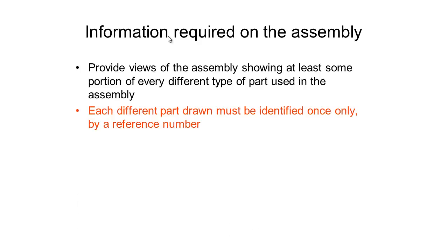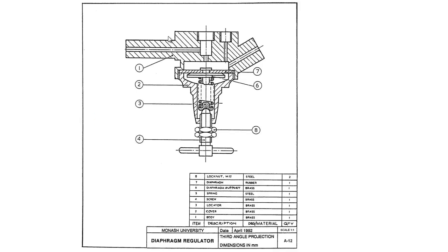The next thing is each different part drawn must be identified only once by a reference number. Referring back to the drawing we just looked at, we had four nuts but we only labelled one of them. We can also look at this example: part number eight, which is two lock nuts — you can see only one of them has been labelled. Only one of the two lock nuts is identified in the drawing, but if we go down to our parts list you can see there are two of them.